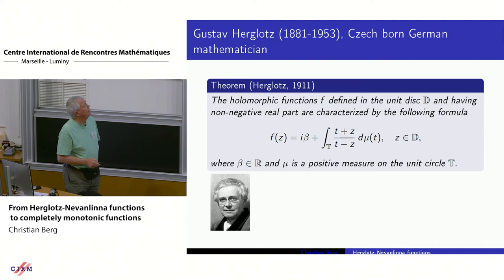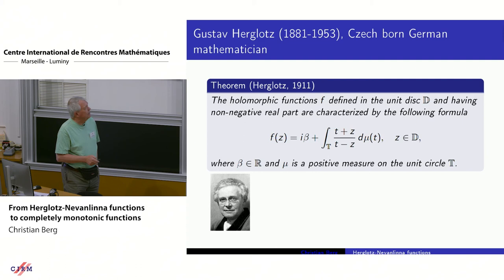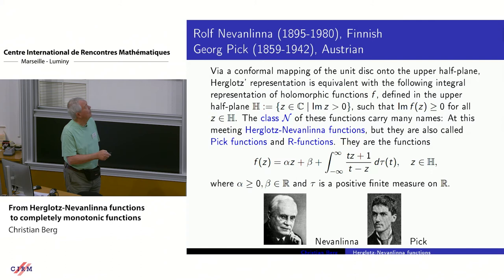To start, there is the famous theorem of Herglotz from 1911. It concerns holomorphic functions in the unit disk having non-negative real part, and he found the integral representation of these functions as precisely the functions written in the formula. It depends on a real number beta and a positive measure mu on the unit circle, the boundary of the unit disk D.